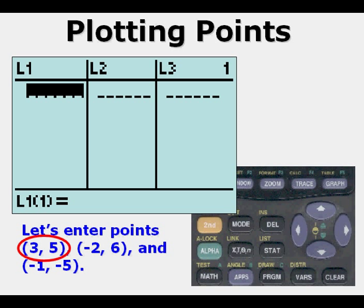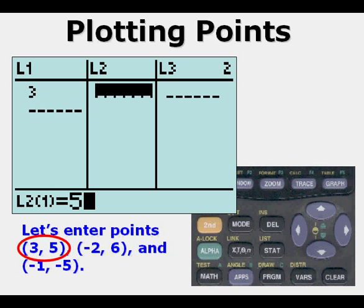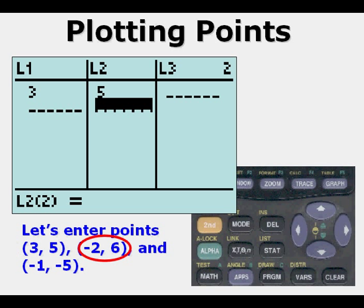To enter three comma five, we enter first the three, then press enter, and then we can arrow over to the right and press five and then enter. So now we've entered three comma five. We can enter negative two comma six in the same manner, and we've done that.